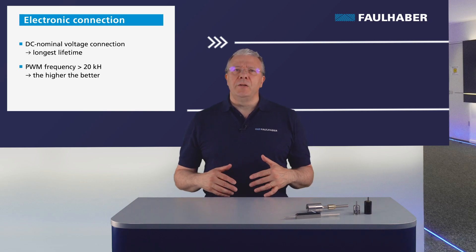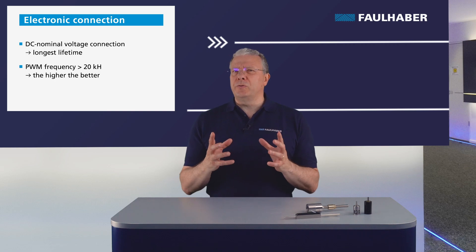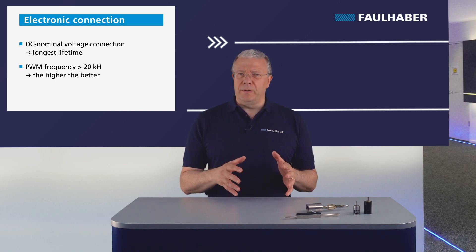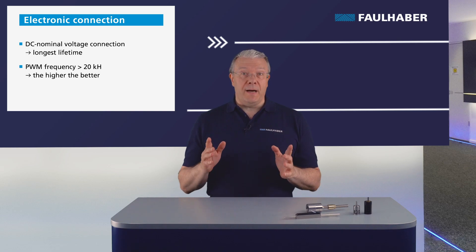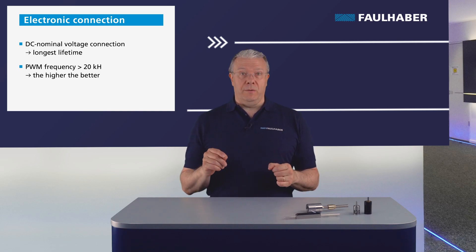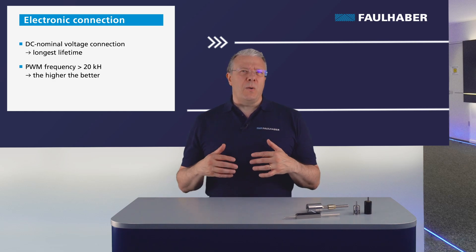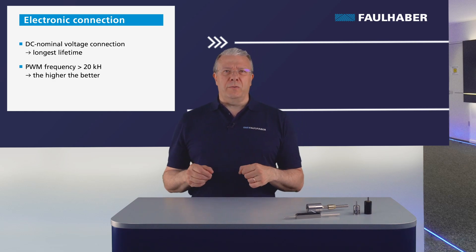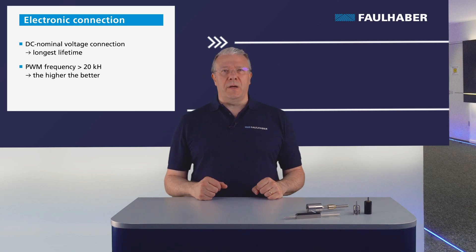If you are designing your own drive electronics for DC motors, it is important to note that coreless motors have low inductance. The PWM frequency must be higher than 20 kHz, because below this value the high winding current variation generates unwanted heat and current peaks on the commutator side. This can dramatically reduce the motor life.